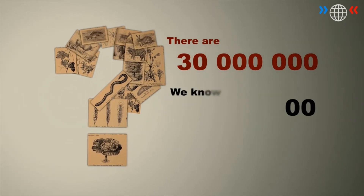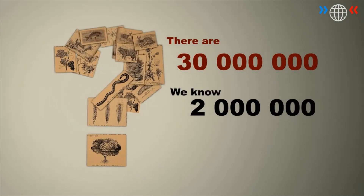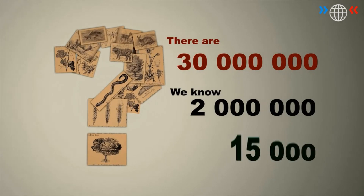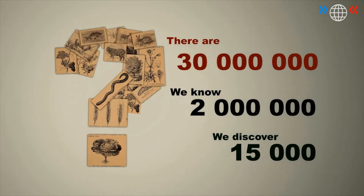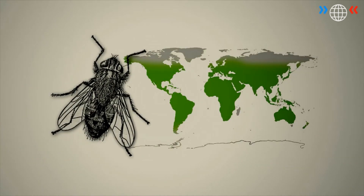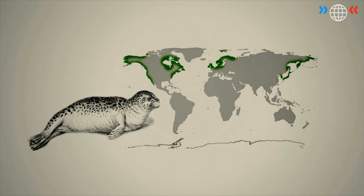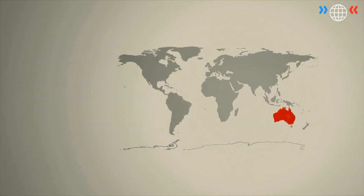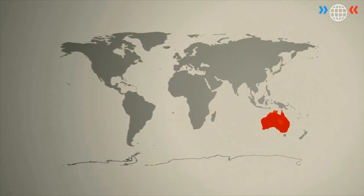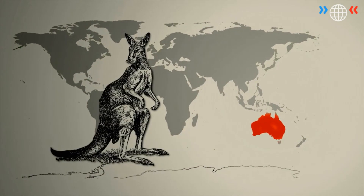Scientists know 2 million species and every year about 15,000 new ones are discovered. Some species are found around the world. Others are only found in small areas as they need special living conditions. Some species are only found in one single place — for example, the red kangaroo. They can only be found in Australia, but nowhere else on the planet.